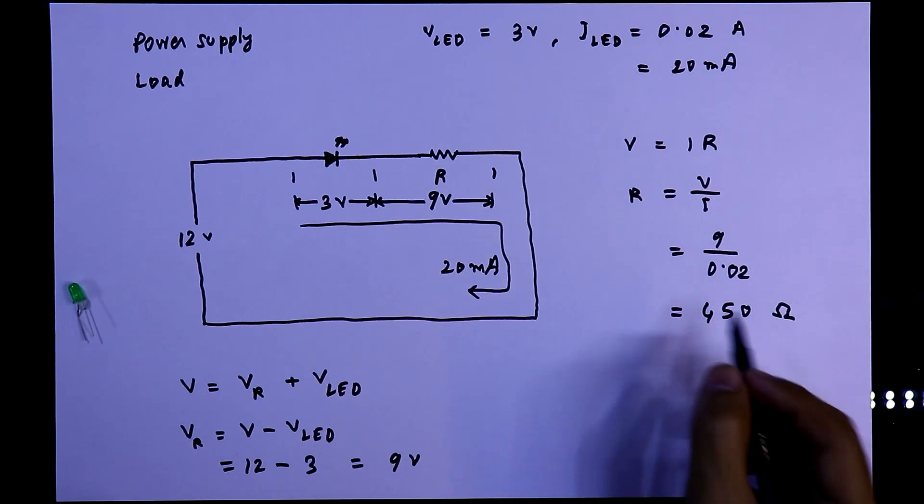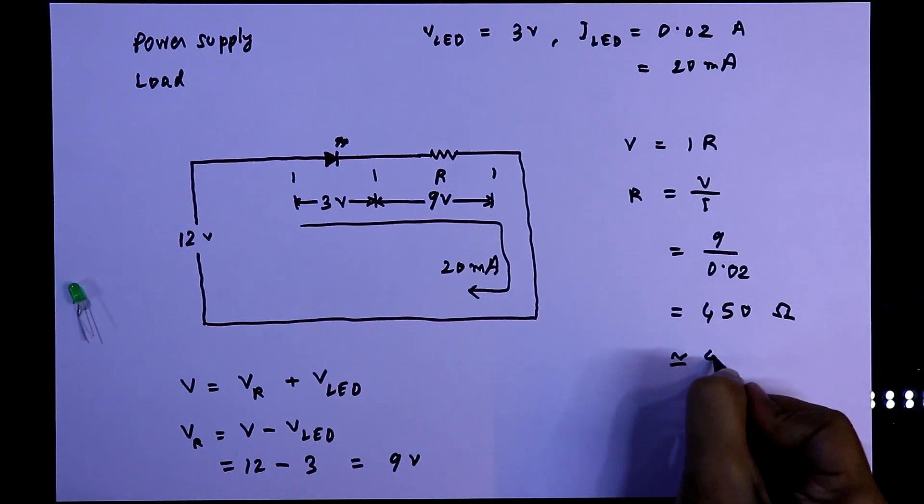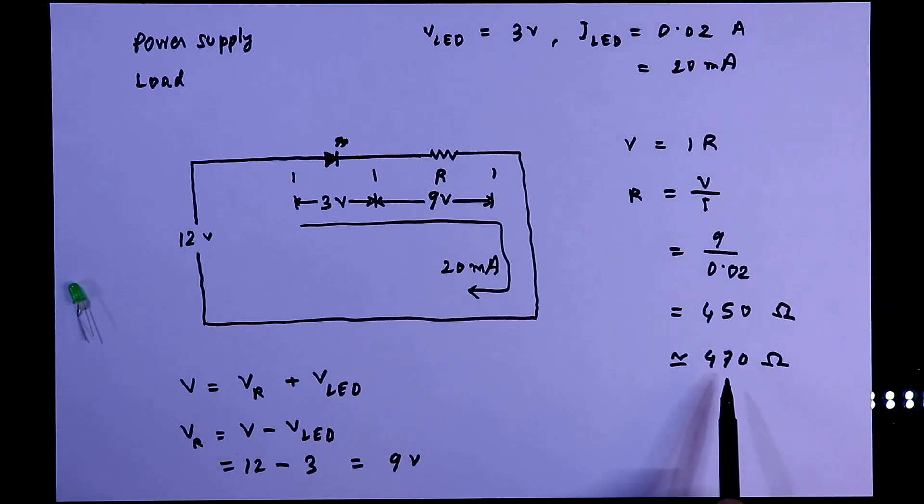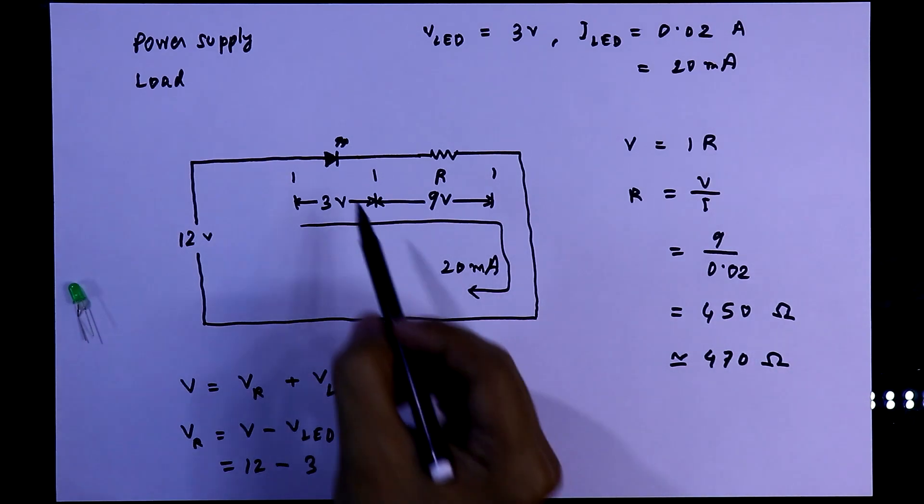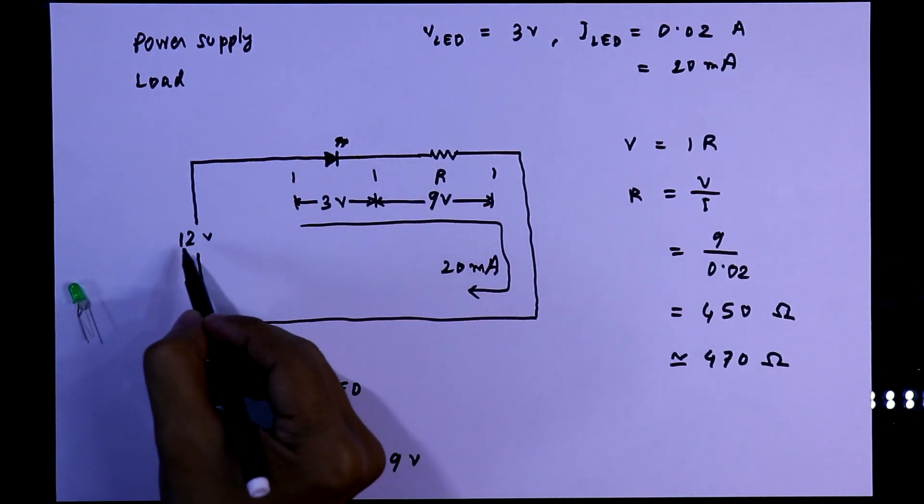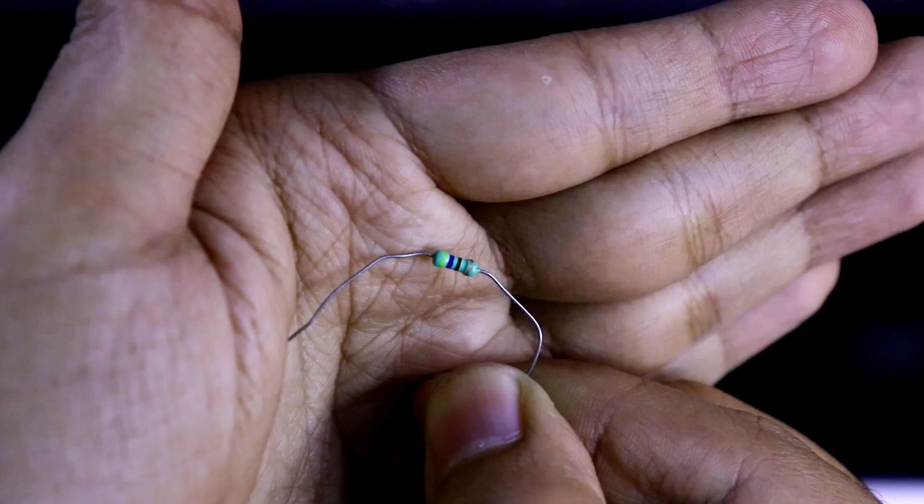Practically, we don't have 450 ohms, so we can use 470 ohms. So by using 470 ohms in series with LED, we can light this LED at 12V. Here it is 470 ohms.